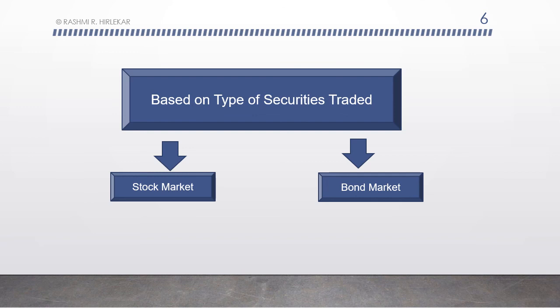A bond market can also be called a debt market, credit market, or fixed income market. The size of the current international bond market is estimated to be $45 trillion. The major bond market participants are government, institutional investors, traders, and individual investors.